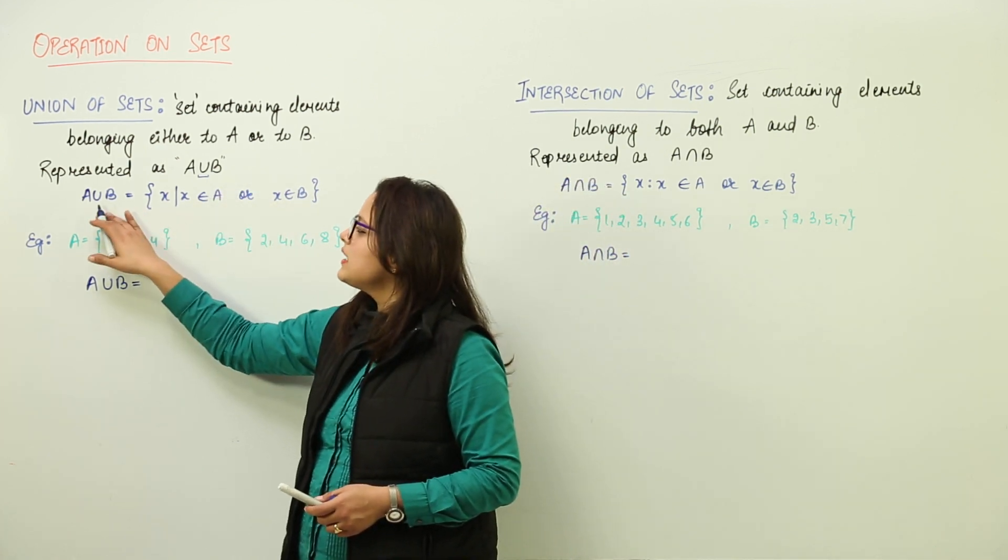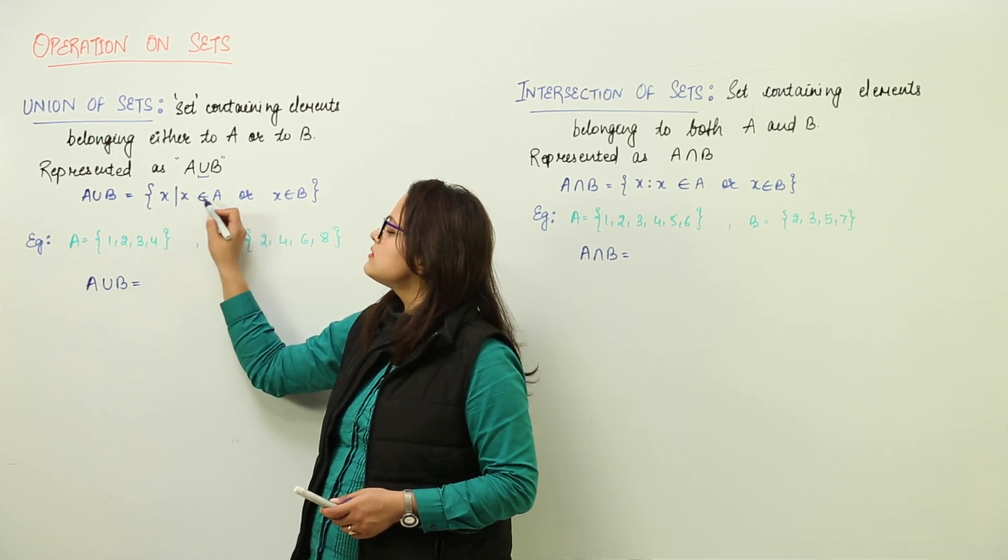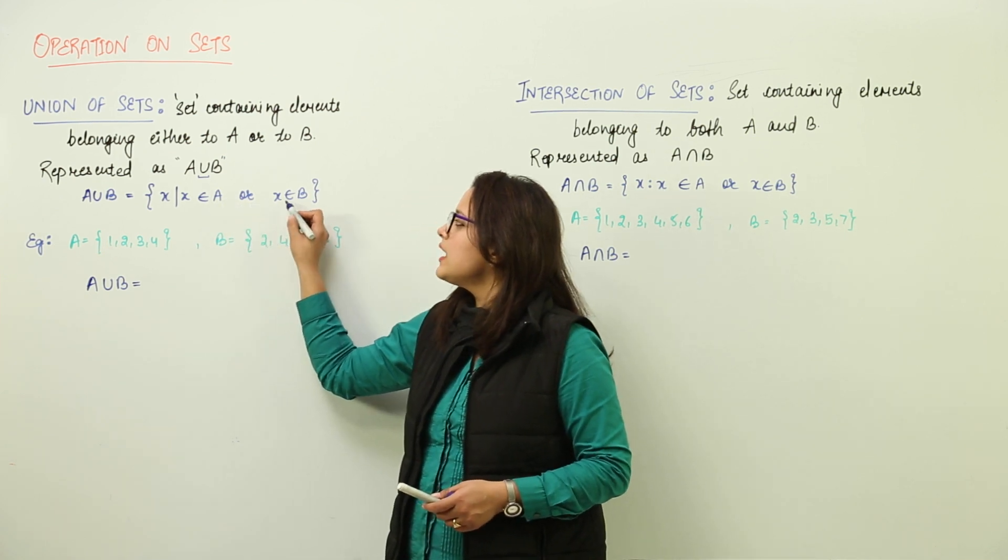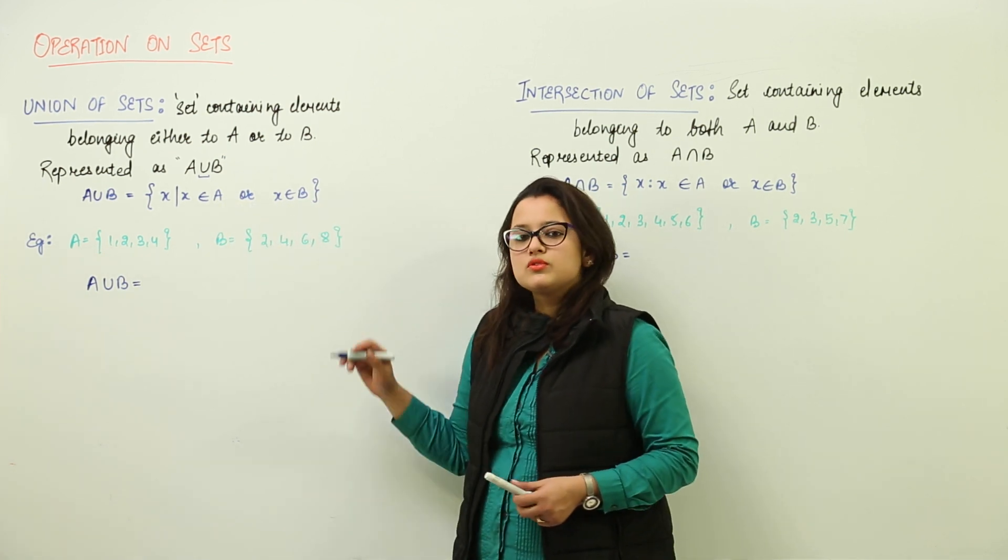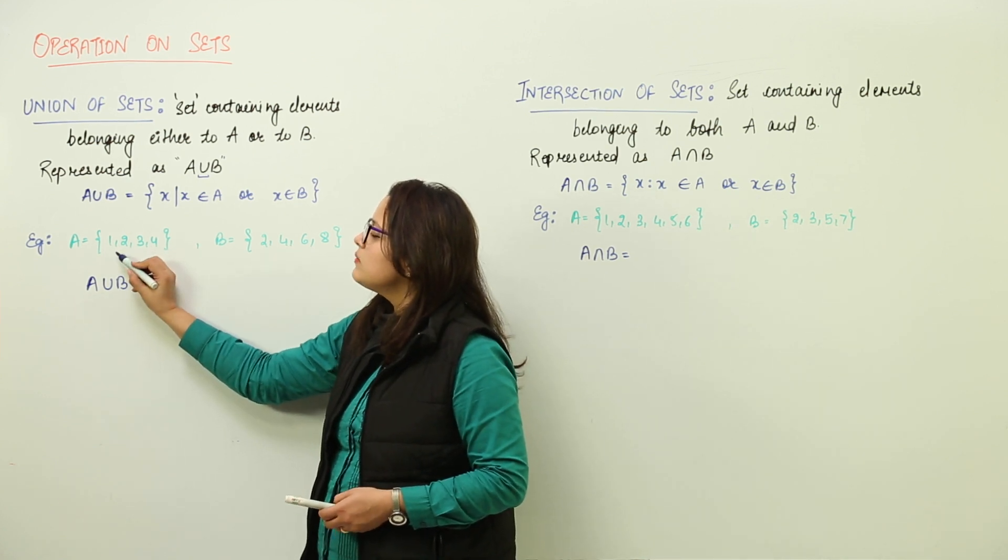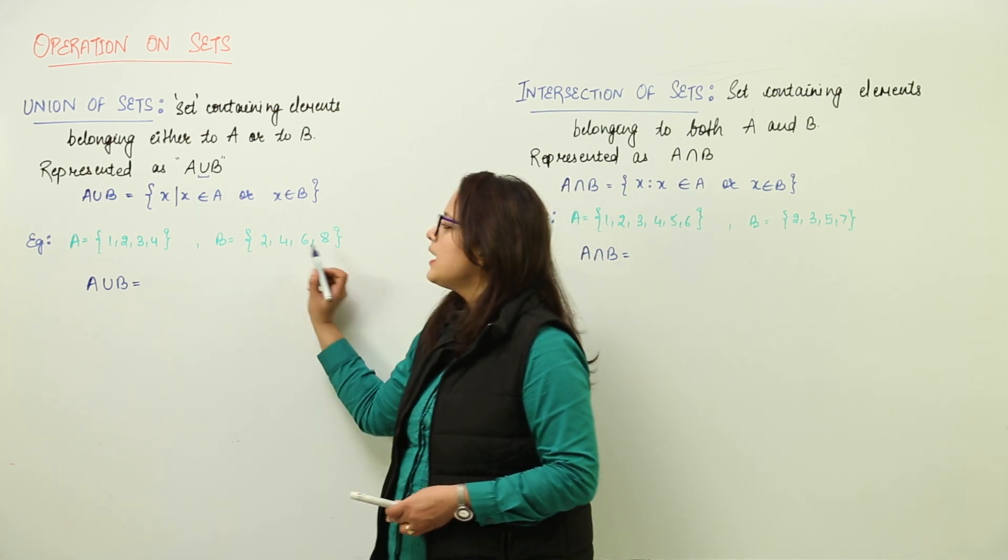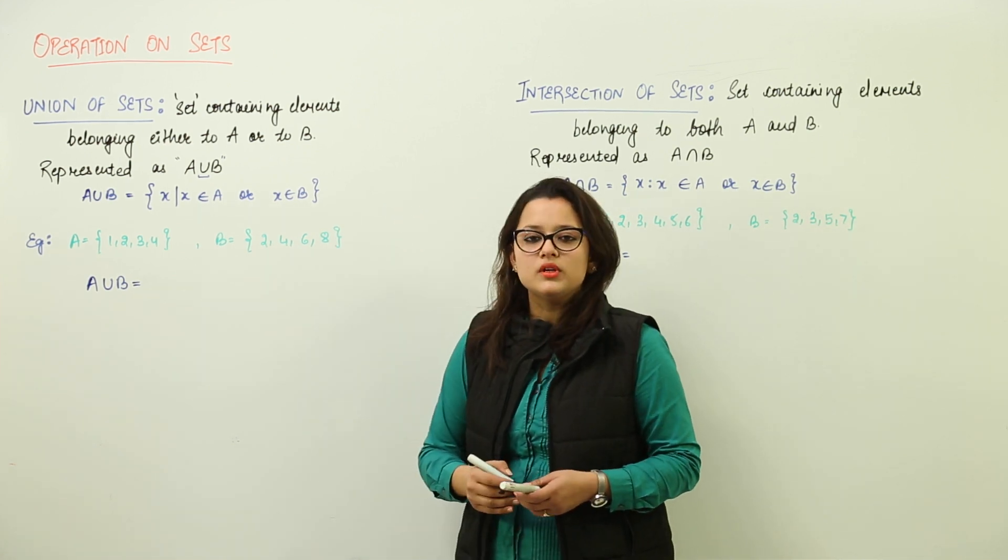This is represented as X such that X belongs to A or X belongs to B. We have an example where A is a set containing elements 1, 2, 3, 4, and B is another set containing elements 2, 4, 6, 8. We have to find A union B.